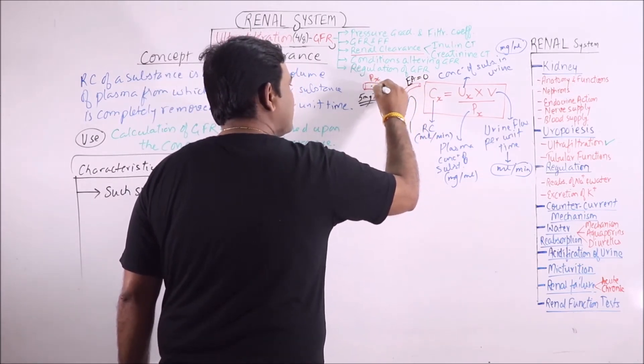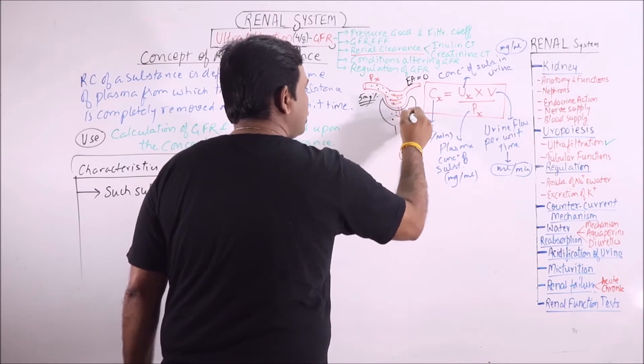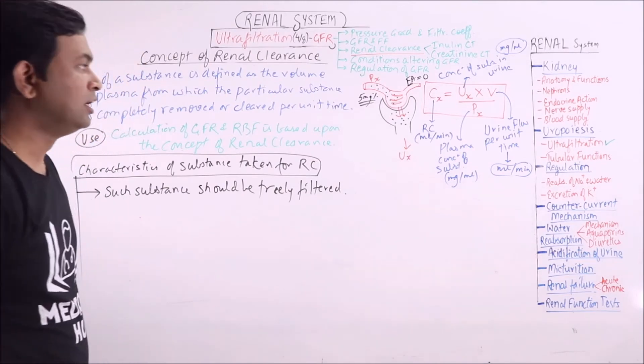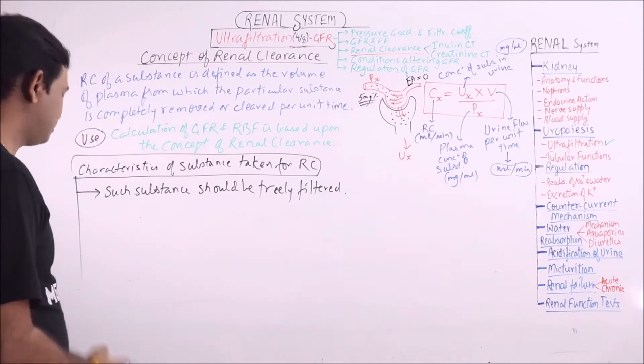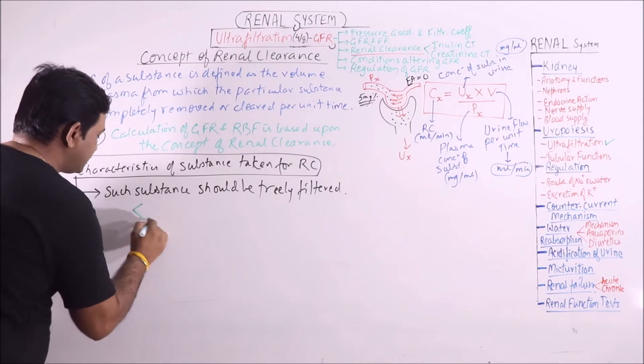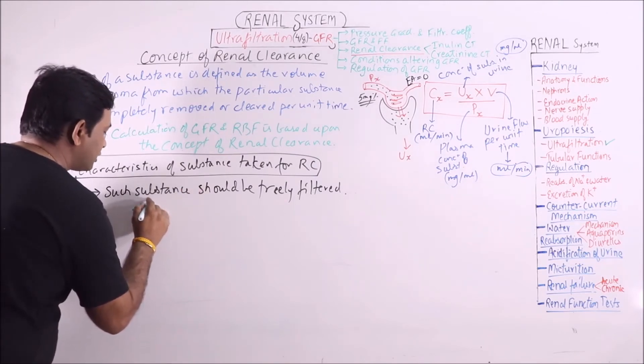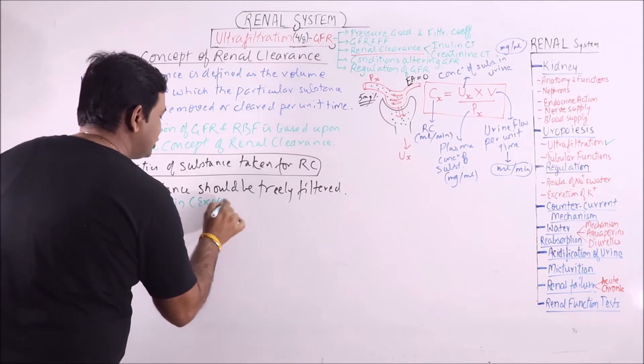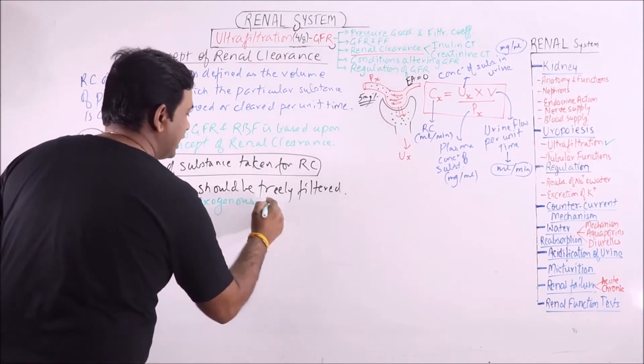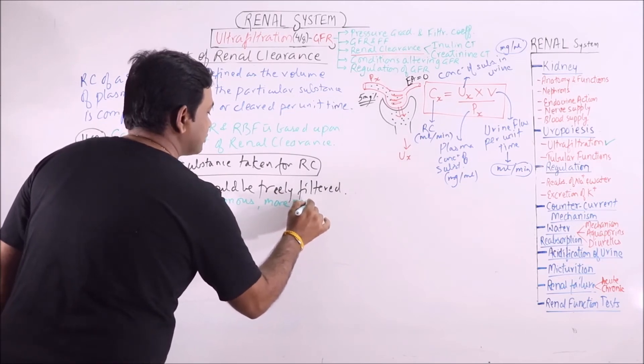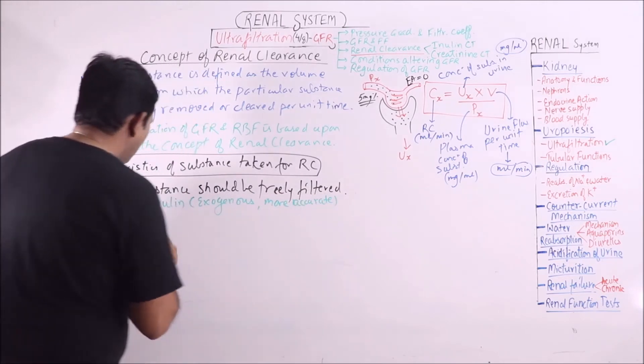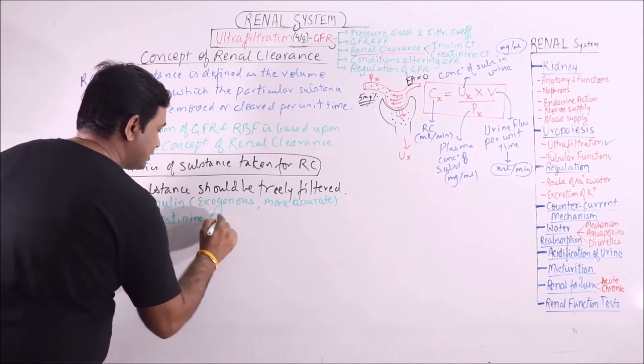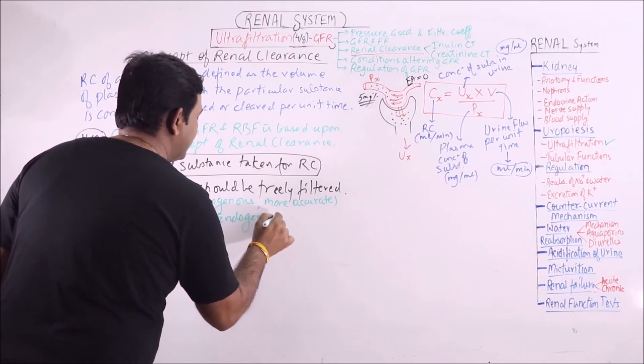That is, all of the substances entering the glomerulus should enter the Bowman's capsule and should not go into the efferent arteriole. That is meant by freely filtered. The substances which are taken are inulin. Inulin is exogenous and it is more accurate. While we can also take creatinine, and creatinine is endogenous.